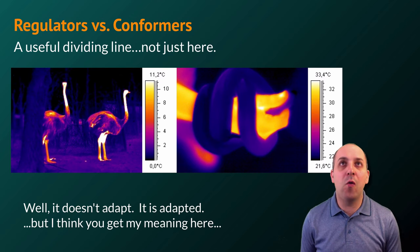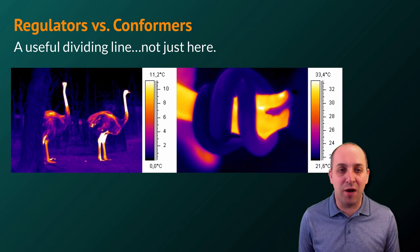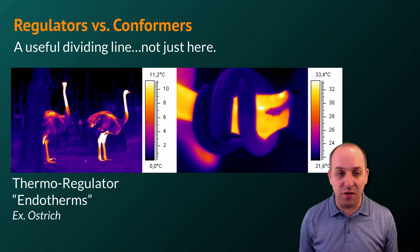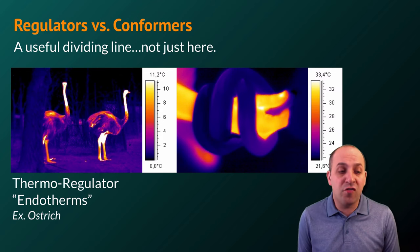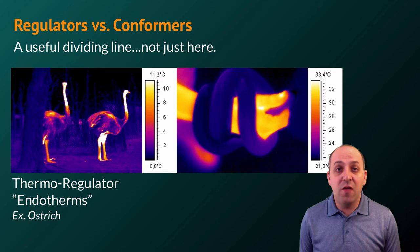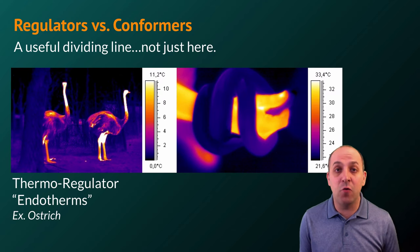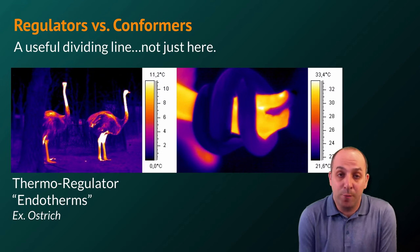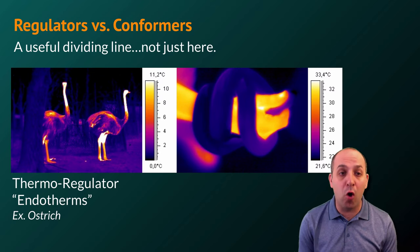When considering how organisms handle the energetics of their environment, we're basically only going to consider animals. And there are two strategies that animals can use. Thermoregulators are what we would call endotherms. These are organisms that spend energy in order to maintain their internal body temperature. A good example of this would be an ostrich, though all mammals and all birds are examples of thermoregulators.